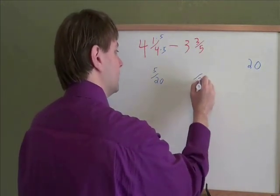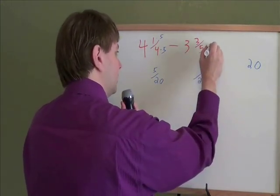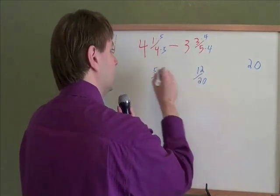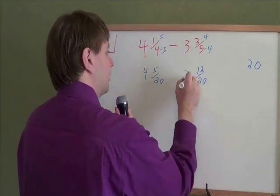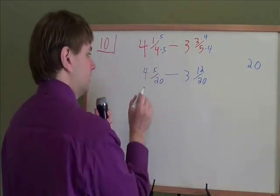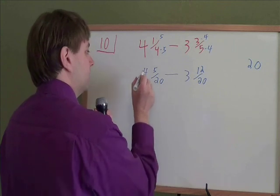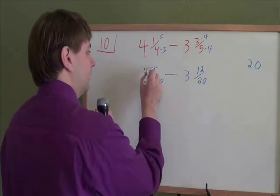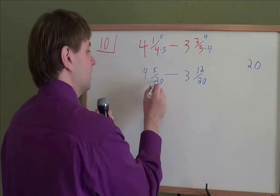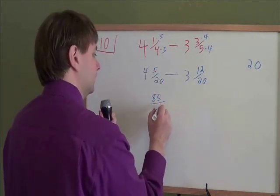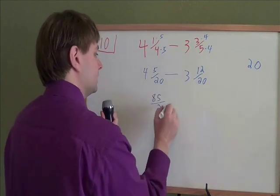Over here to turn fifths into 20ths, you need to multiply by 4. 3 times 4 is 12. The 4 and the 3 stay what they are for now. Next you need to change these mixed numbers into improper fractions. And the way to do that is to multiply 4 times that 20 on bottom and then add that 5. 4 times 20 is 80, plus that 5 is 85. And the denominator stays the same.